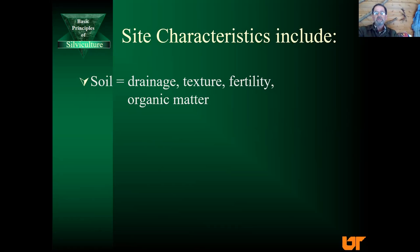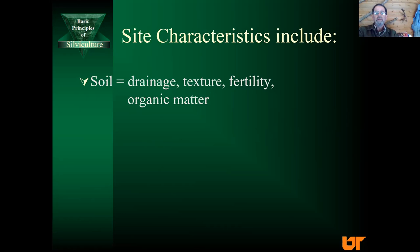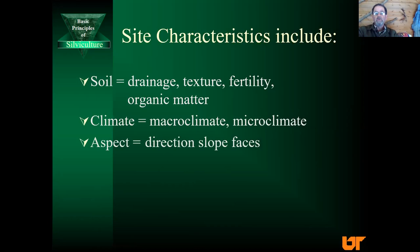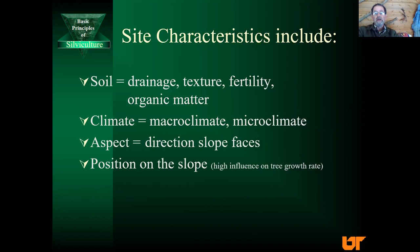Soil texture refers to the percentage of sand, silt, and clay — that determines what can be planted. Consider fertility and organic matter. Look at the climate too — what is the macro climate? You don't want to plant tropical trees in the mountains of East Tennessee and vice versa. Think about what species are native. Even the micro climate matters, because trees might grow better on the cooler side of a hill than the warmer side, which comes down to aspect — what direction a slope faces. In our region, south and southwesterly slopes are very dry, limiting the species you can plant. The position on the slope also matters — whether you're planting high on a hillside, on the side slope, or in a bottom.